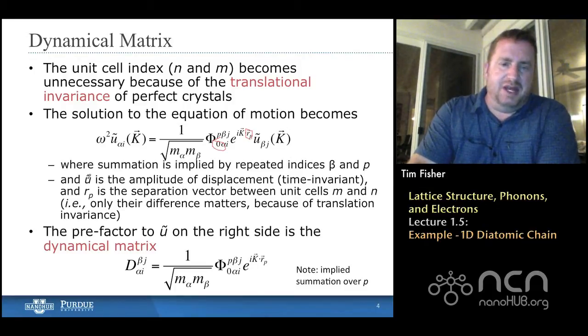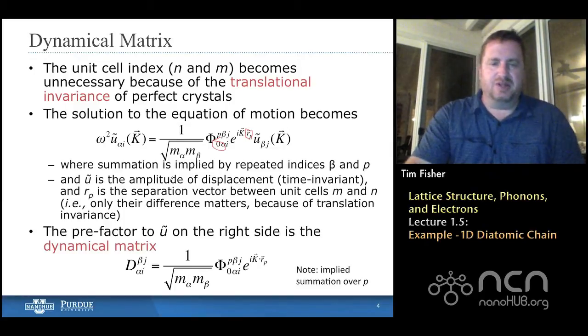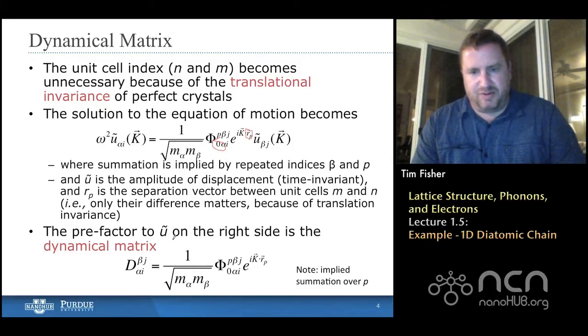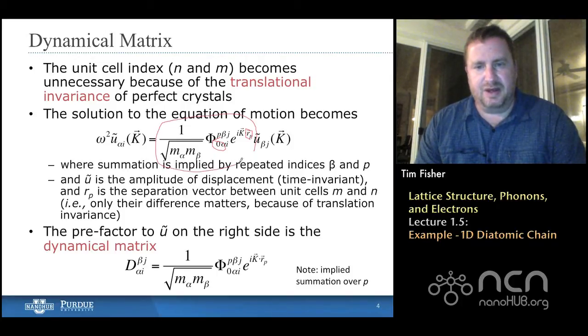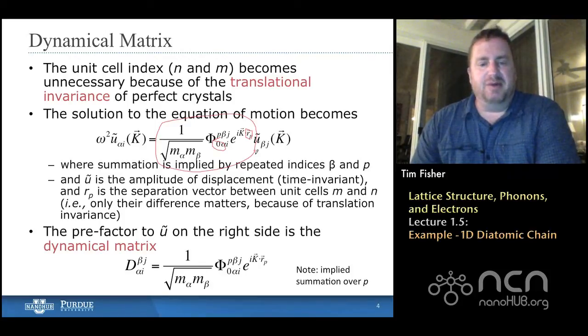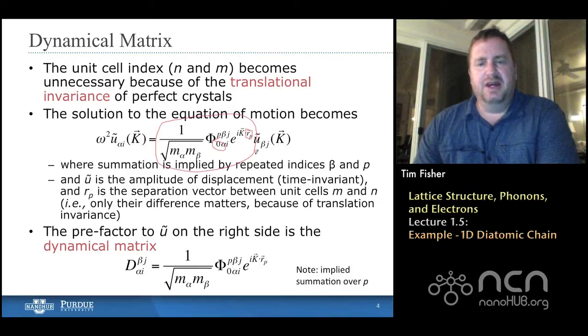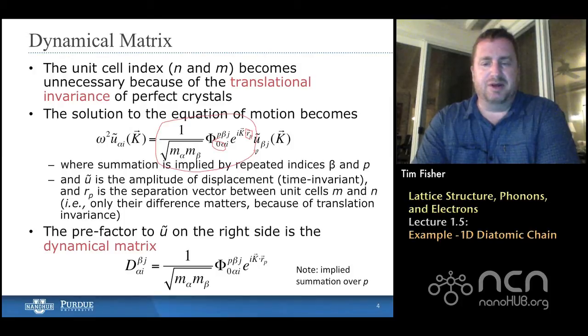All right. So in this case, U tilde is the amplitude of displacement. It's time invariant. And we already talked about R_P. So I think we're ready to go. What we'll find, and what we do find, is that this grouping of terms, the grouping of terms that's sitting right here, pre-multiplying the atomic displacement amplitude, that we will call the dynamical matrix. And so we pulled that out and identified that. And we will go through and calculate it for an example problem here in just a little bit.